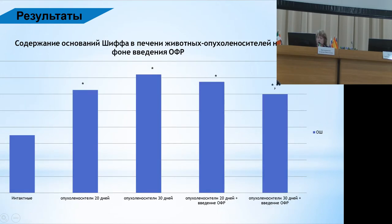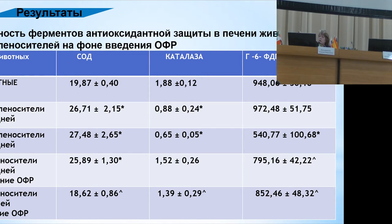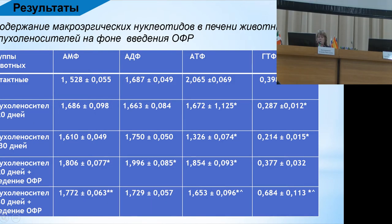If we look at the activity of enzymes: superoxide dismutase remains at a comparable level. The activity of catalase is restored — the antioxidant balance returns. The activity of glucose-6-phosphate dehydrogenase is also restored, which is very important. Regarding the restoration of the pro-oxidant/antioxidant balance — the metabolic processes and the structure of cellular membranes are being restored, as are their functions.